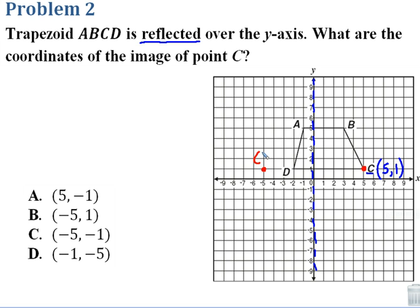And here's our C prime at, looks like, negative 5, 1. So B is the answer there.